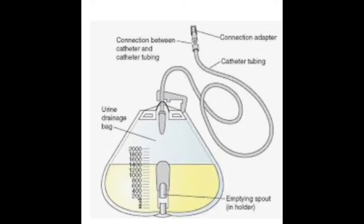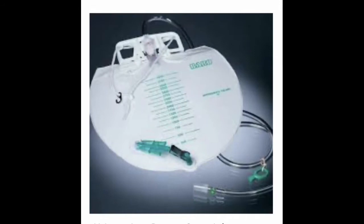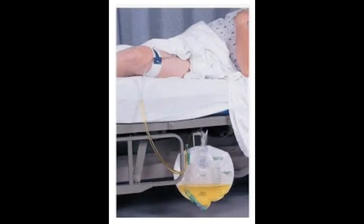Understanding urine drainage bags. A urine drainage bag collects urine. The bag is attached to a catheter that is inside of the resident's body. The tubing from the catheter should always flow over the patient's leg. The urine drainage bag must be placed lower than the bladder in order to prevent reflux of urine back into the bladder. Never allow the urine drainage bag to touch the floor. It should be anchored to the bed frame and able to flow freely.